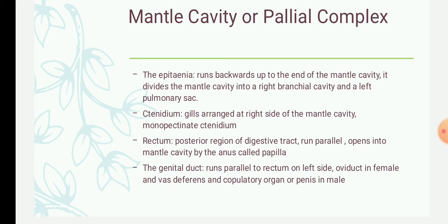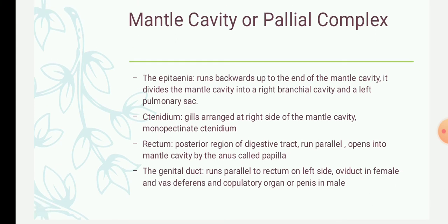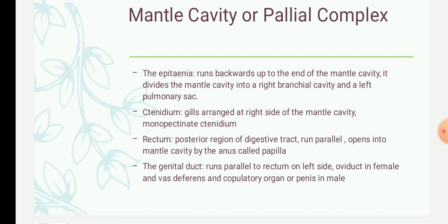The ctenidium has a central axis with a series of gill lamellae arranged on one side of this axis. This arrangement of gill lamellae on one side of the axis means this type of ctenidium is termed monopectinate ctenidium. The rectum is the posterior region of the digestive tract, located towards the left side of the ctenidium, running parallel to it. It opens into the mantle cavity by the anus, which is situated on a projection called the papilla.